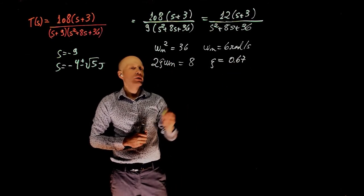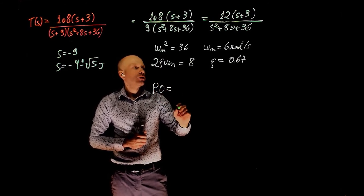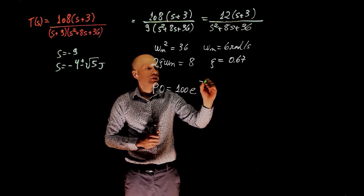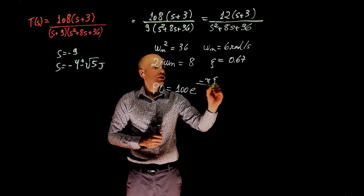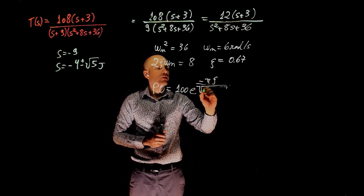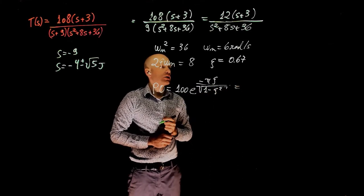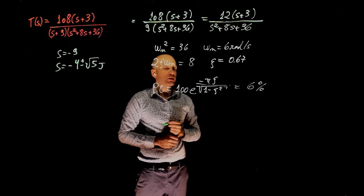From zeta, we can calculate the percent overshoot as 100 exponential of minus pi times zeta divided by square root of 1 minus zeta squared, and this is 6%.